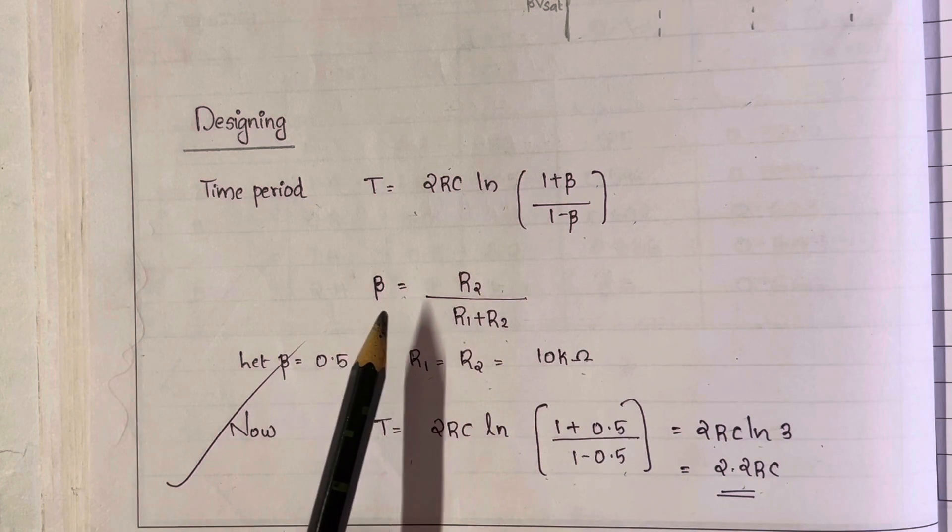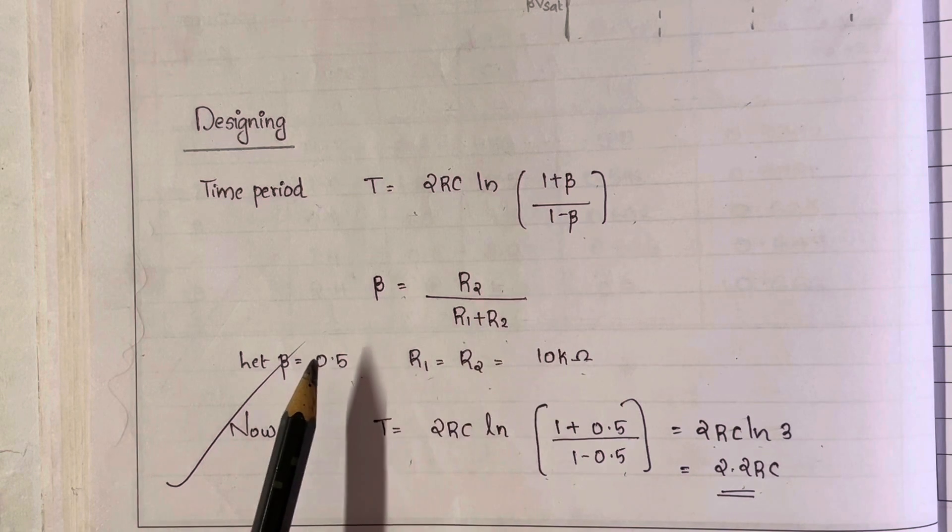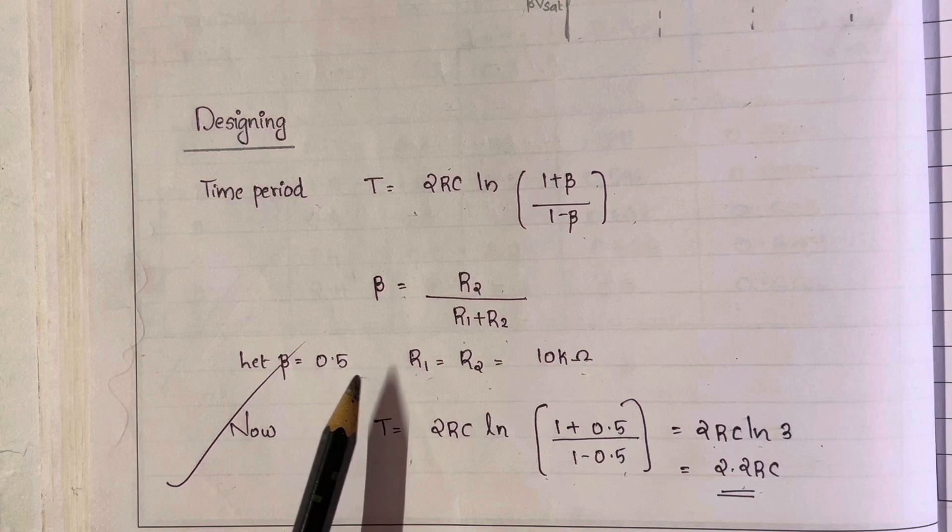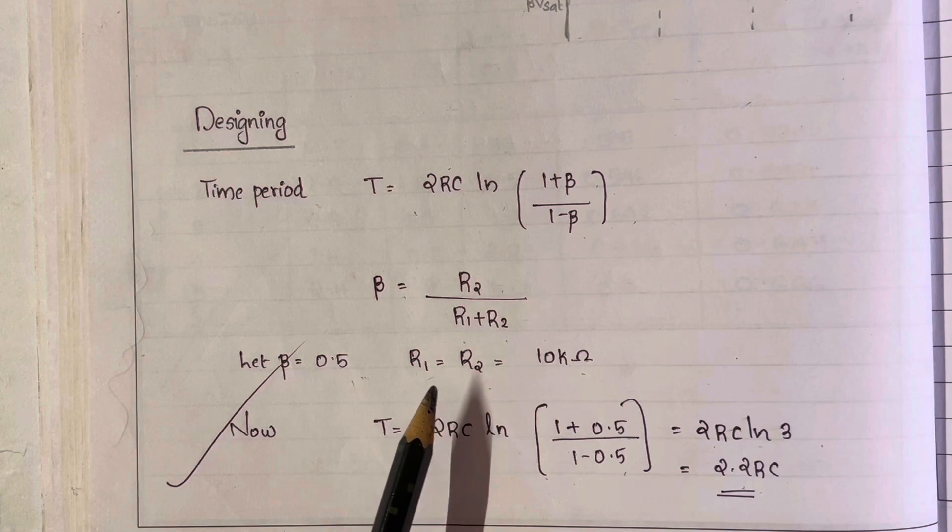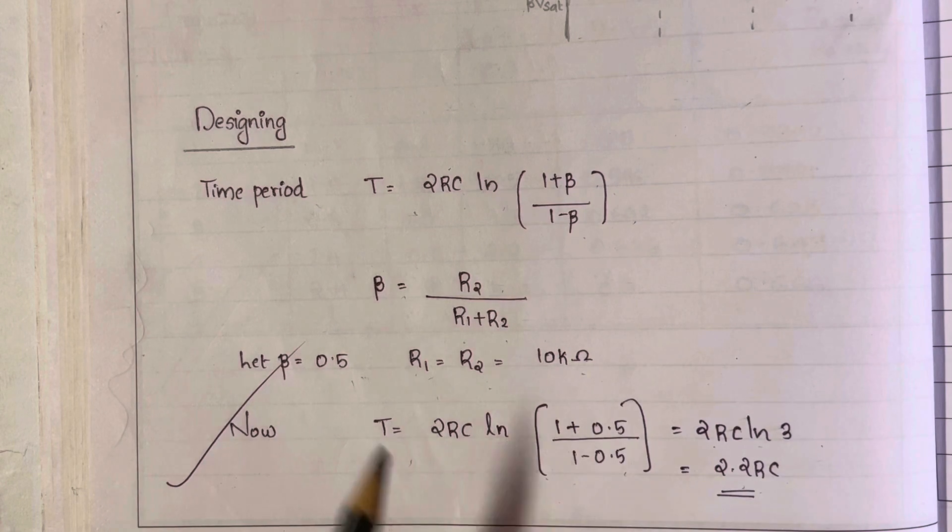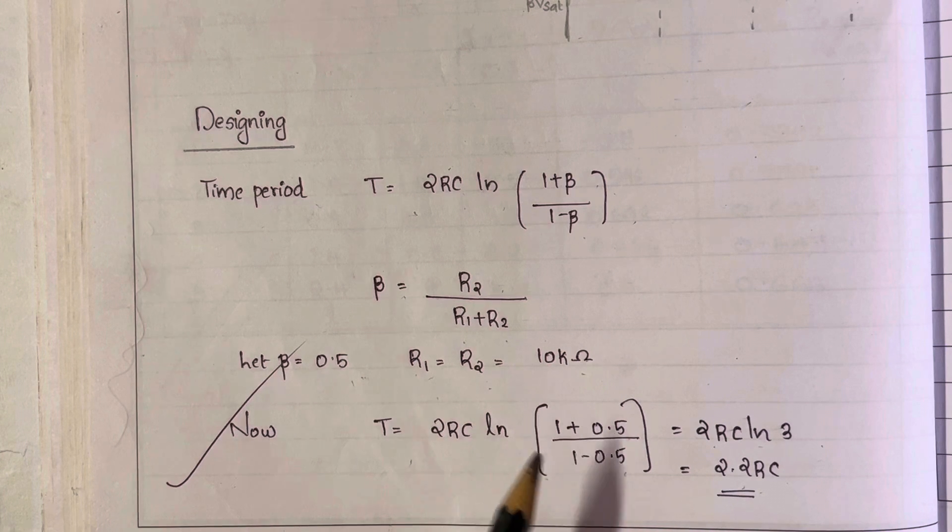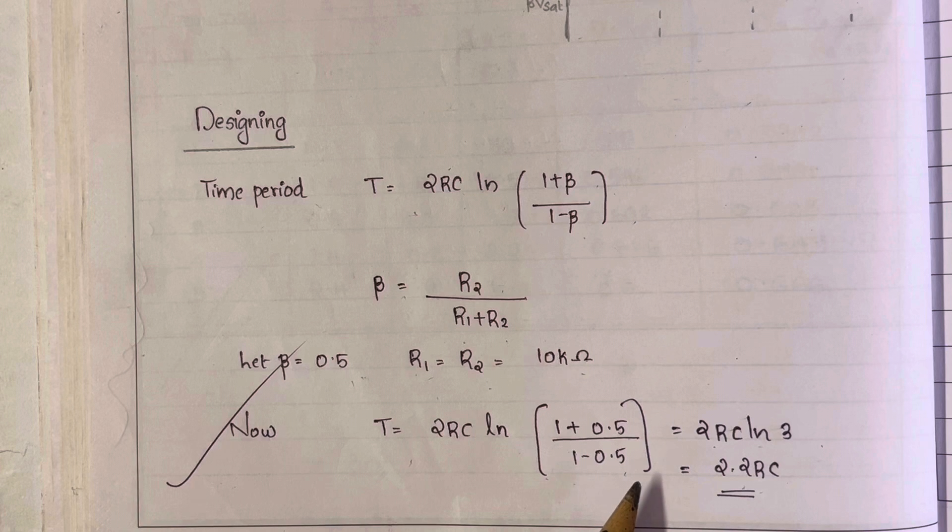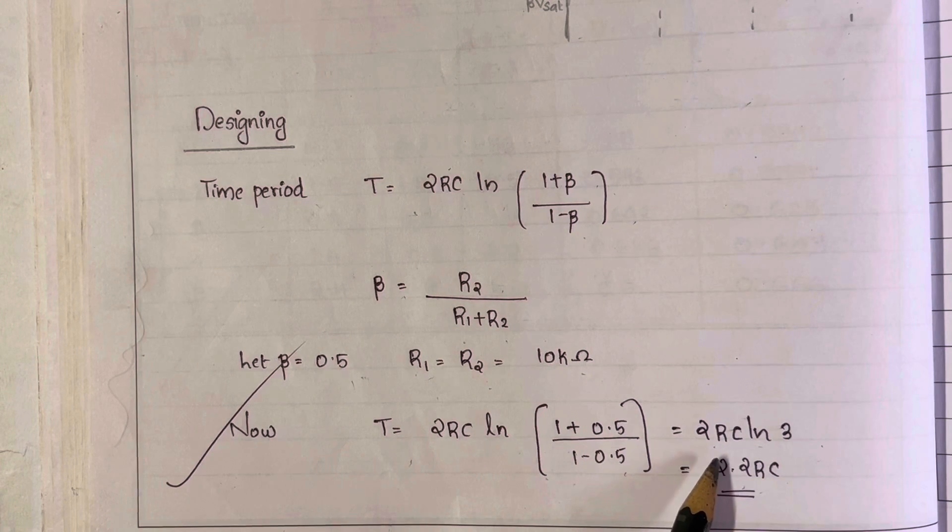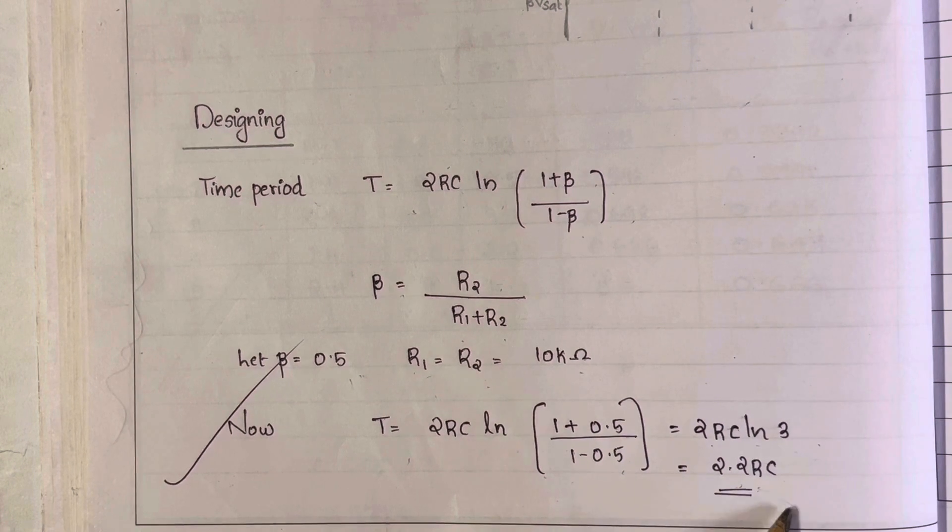The expression for beta is given by R2 by (R1 plus R2). Generally beta has a value of 0.5. For convenience, let us take R1 is equal to R2 is equal to 10K ohm. Substituting these values, we get T is equal to 2RC log of (1 plus 0.5) by (1 minus 0.5), that is equal to 2RC log 3, which equals 2.2RC.